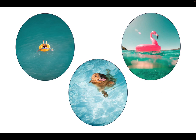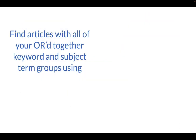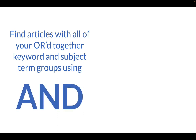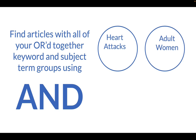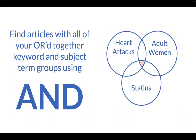After we have our three ORed together article pools, we want to find articles in the database with all of our ORed together keywords and subject term groups. To do this, we combine them using the AND operator. Here's our heart attack pool, our adult women pool, and our statin pool. Combining these using AND tells the database that we only want to see articles that talk about all three topics. We use OR at the beginning to expand our searches and then use AND at the end to shrink our search down to highly relevant articles.